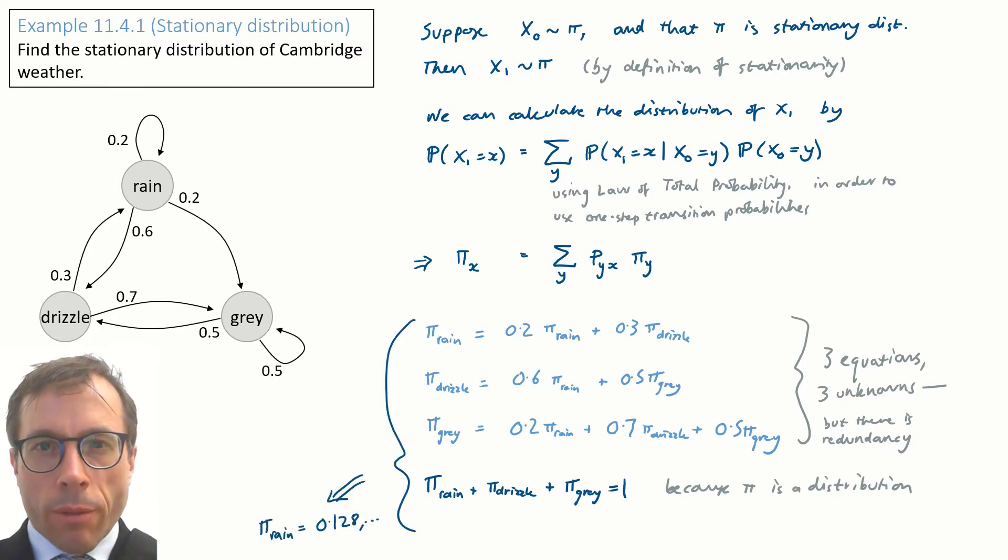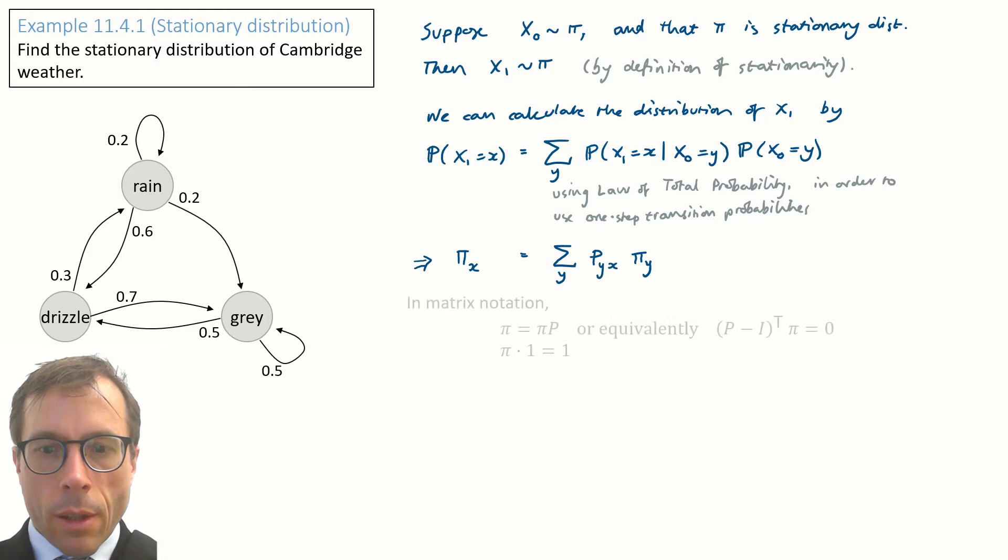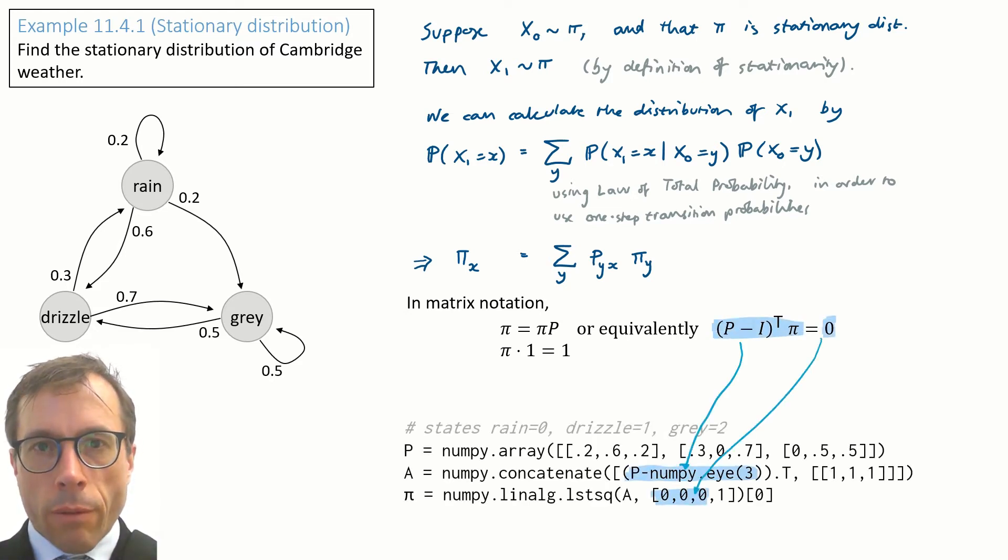Of course, you don't want to be solving equations like this with pen and paper when you have a computer in front of you. Let's rewrite the equations in linear algebra form so we can use standard library packages for linear algebra. Here is the matrix notation for the equations that we've just written down. Also, I've written π·1 = 1, in other words, our extra equation that says π has to sum to 1. And here's code for solving it. I'm just writing out exactly those matrix equations in numpy syntax.